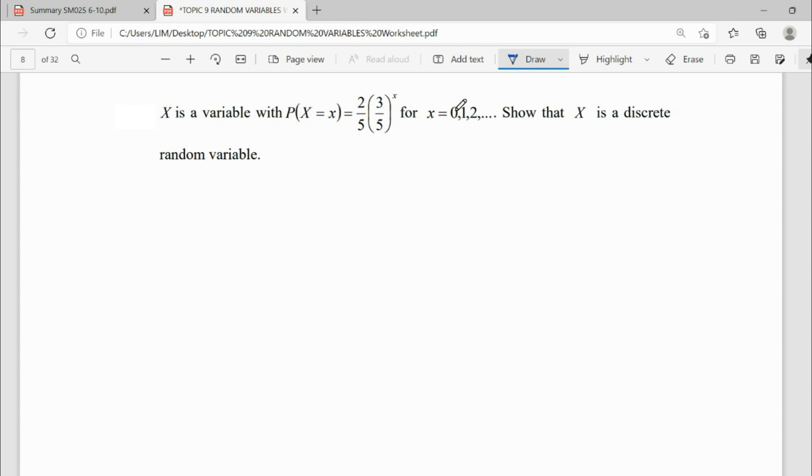This discrete random variable is 0, 1, 2, and so on, which means endless. We have 3, 4, 5, 6, 7, 8, 9, 10, and infinity—unlimited. We don't have any limit of this X, so we have to show this X is a discrete random variable.